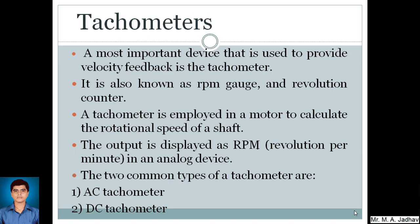So first type is tachometer. The most important device that is used to provide velocity feedback is the tachometer. It is also known as RPM gauge or revolution counter. A tachometer is employed in a motor to calculate the rotational speed of the shaft. The output is displayed as RPM, that is revolution per minute, in an analog device. The two common types of tachometer are AC tachometer and DC tachometer.